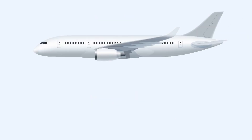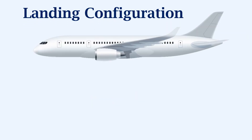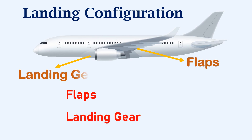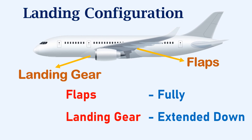Landing configuration. The aircraft should be fully configured for landing, which is with respect to the flaps and the landing gear. In normal flying conditions, for a stabilized approach, the flaps should be extended fully and the landing gear should also be extended. It should also be ensured that they are locked in their respective positions.